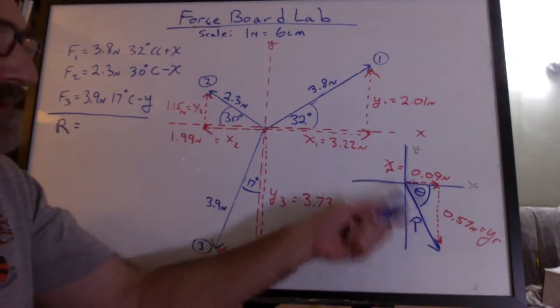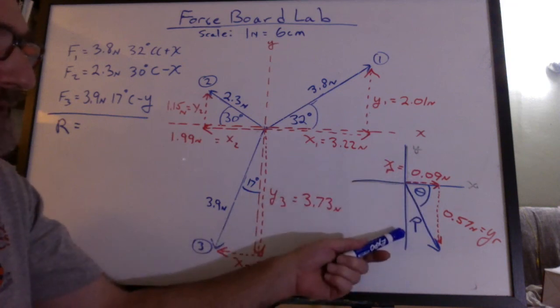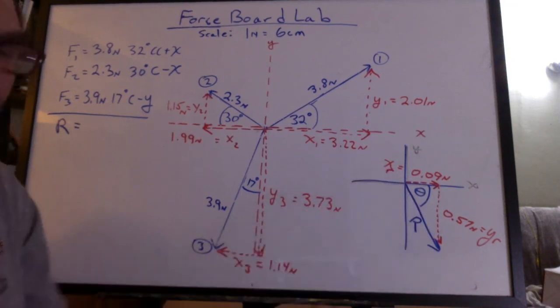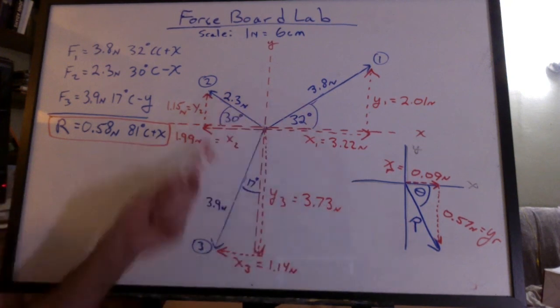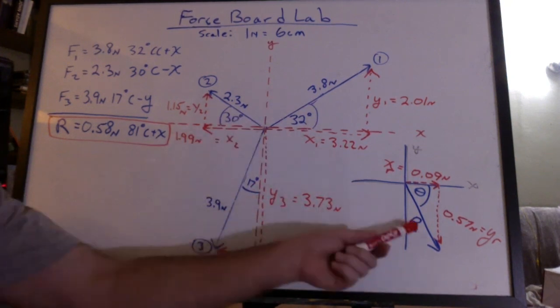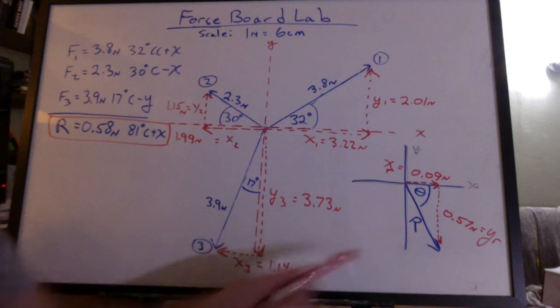Now the last step to use the Pythagorean theorem to get the magnitude and inverse tangent to get the angle. And that's the magnitude and direction of my resultant vector. Now, I've put that resultant over here to keep this clean. And it's not even drawn to scale over here.